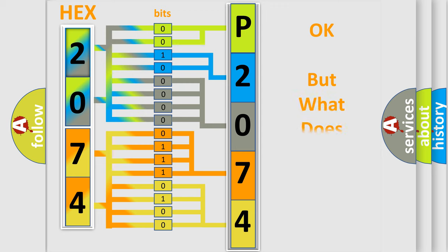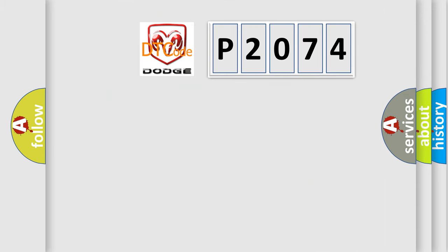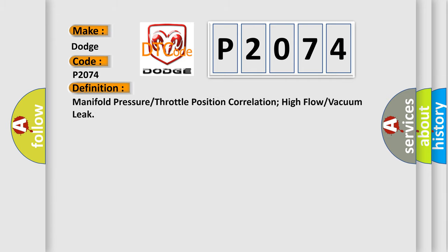The number itself does not make sense to us if we cannot assign information about what it actually expresses. So, what does the diagnostic trouble code P2074 interpret specifically for Dodge car manufacturers? The basic definition is: Manifold pressure or throttle position correlation — high flow or vacuum leak.